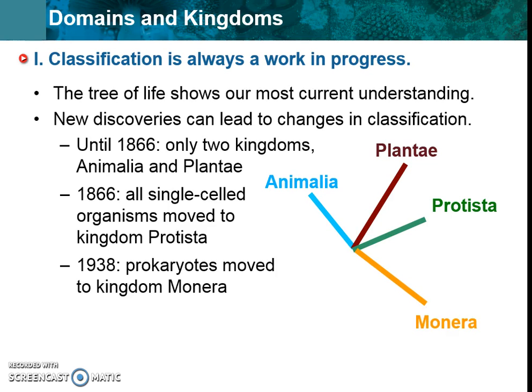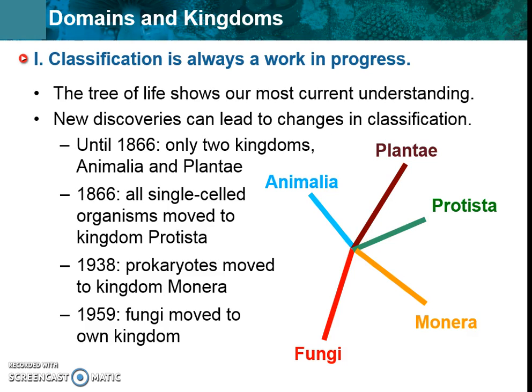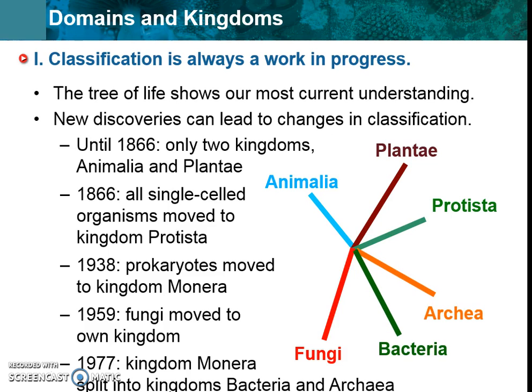Even later, we started to see that there seem to be things quite different than those single-celled organisms. So we started adding this other category — Monera. You might be saying, what is a Monera? Exactly — we don't ever talk about that category anymore because it doesn't exist anymore. Then we added the category Fungi, because those aren't quite animals, plants, or prokaryotes. And lastly, that Monera category disappeared because we started getting really cool data saying let's split it up into bacteria and archaebacteria. The big idea is it's always changing.